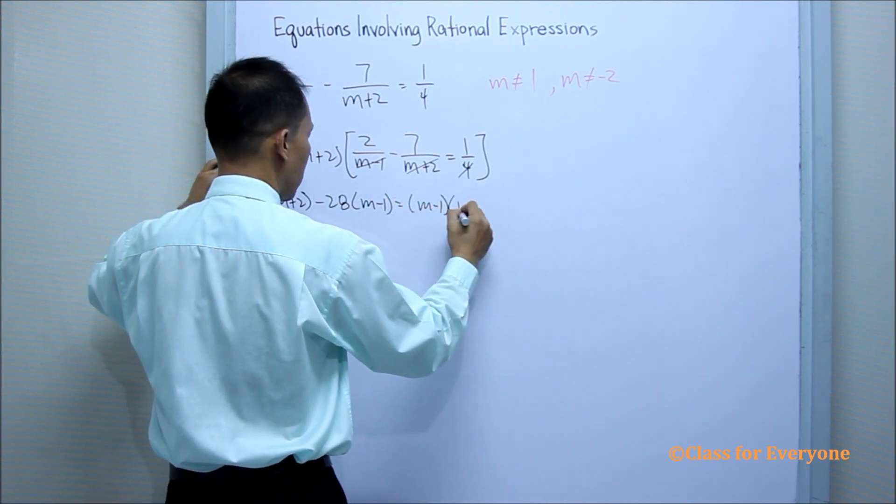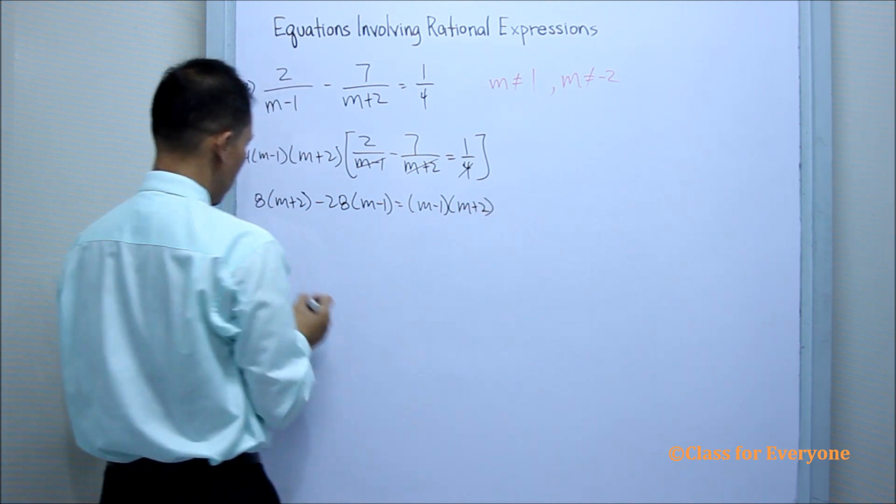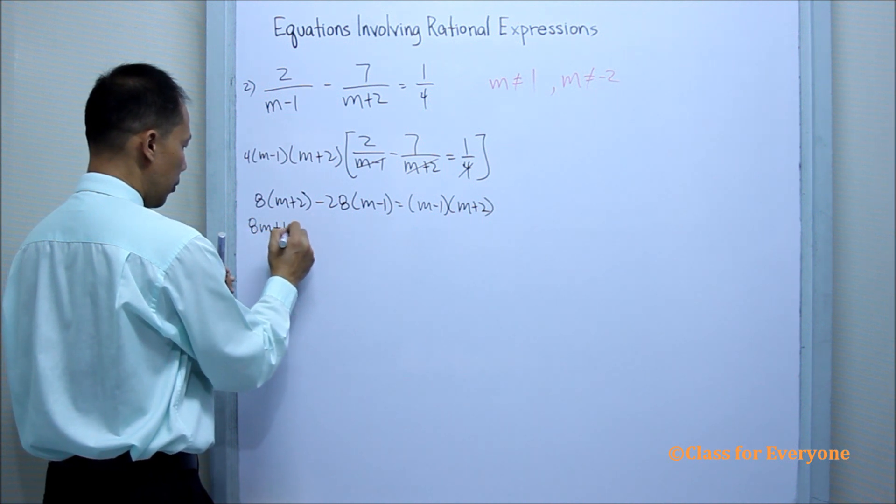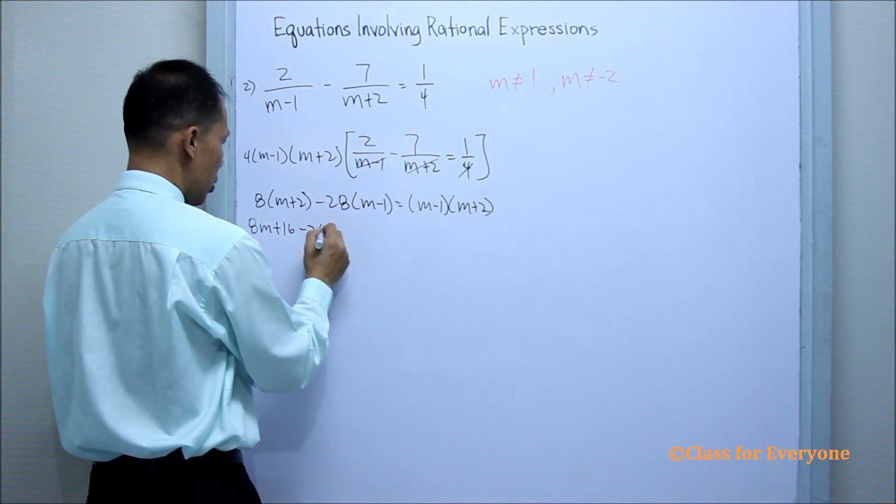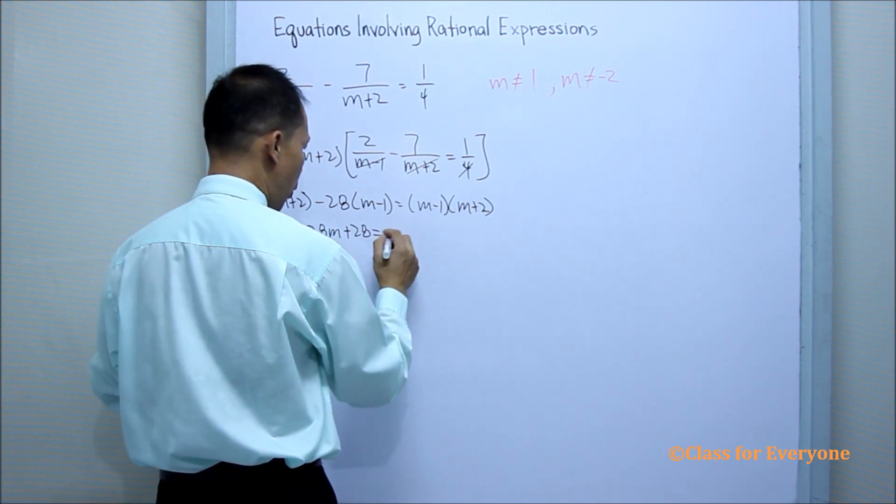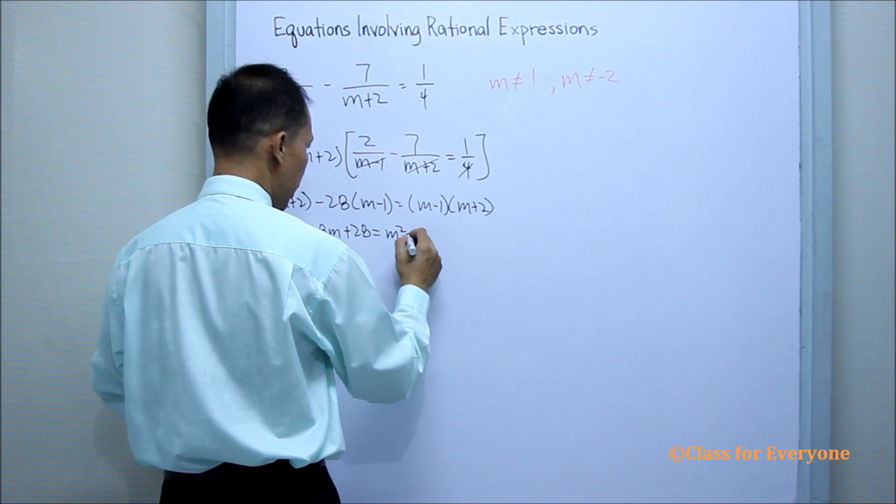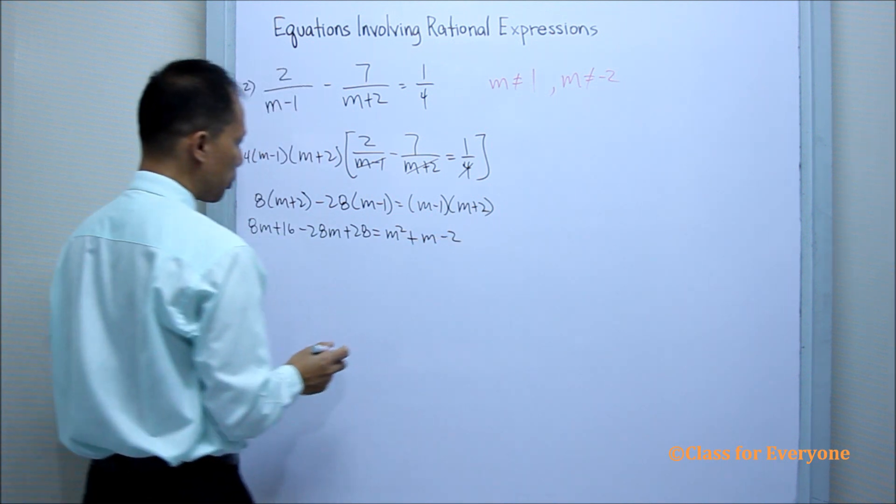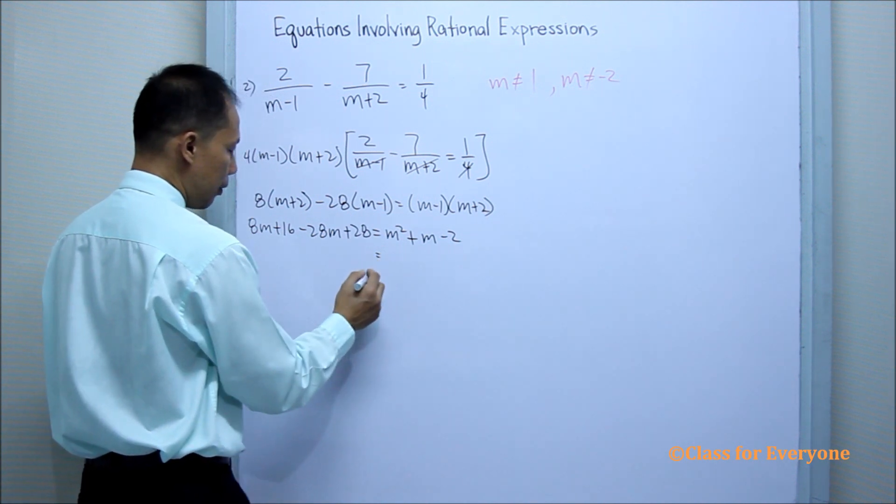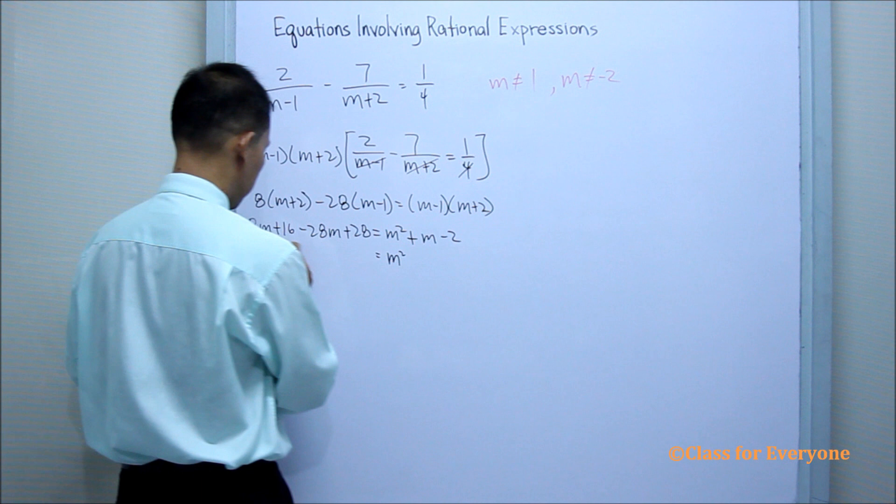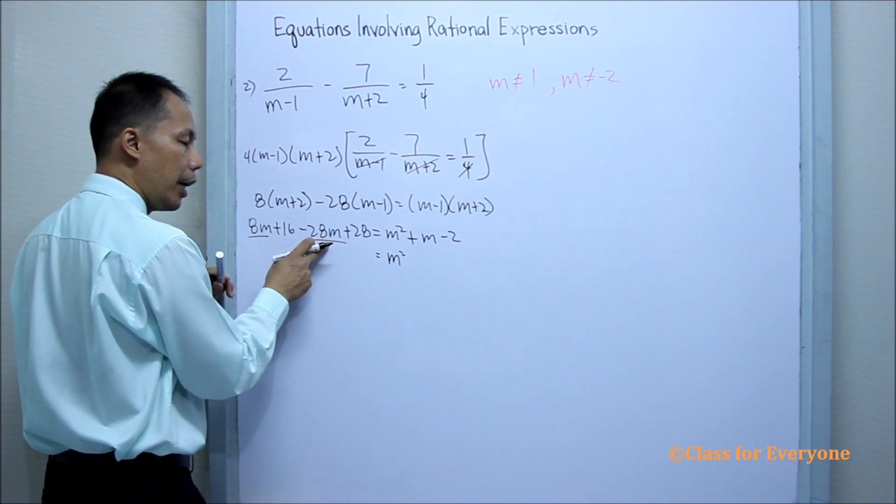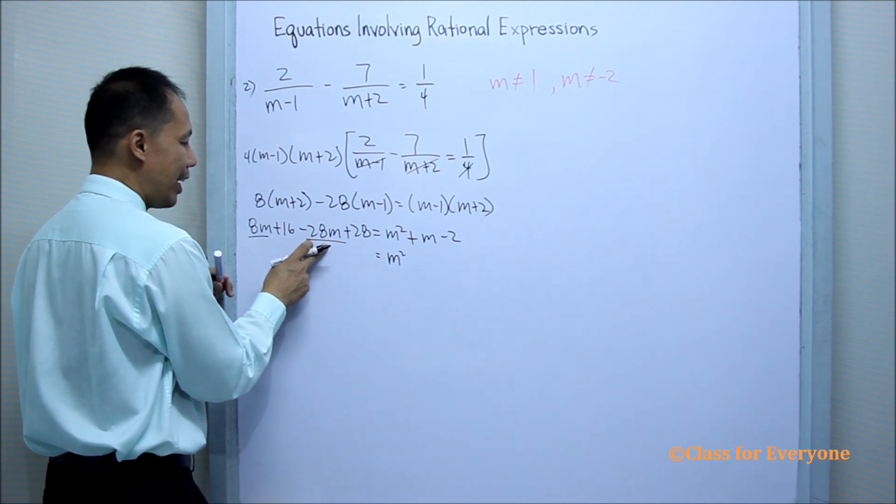So the remaining LCD will be m minus 1, m plus 2. Now, distributive property, we will have 8 m plus 16 minus 28 m plus 28 equals, using the foil, m squared plus m minus 2. So combining like terms, we will have m squared,